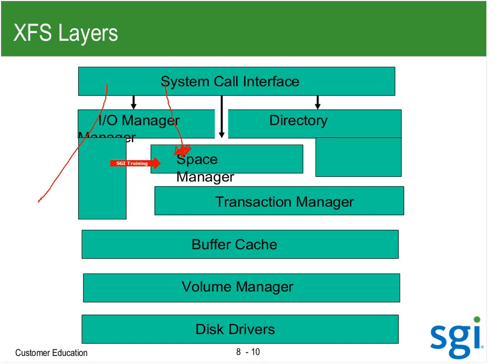If I'm just accessing the directory without allocation space changes, it still results in file system tree changes. The transaction manager is my journal. I do not get journaling activity if I just do reads. But I can get journaling activity from an ls or a find nowadays because access time on directories is now tracked.